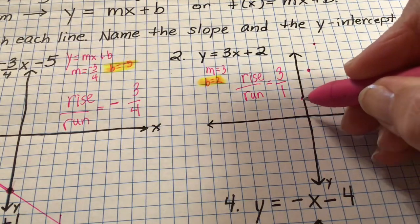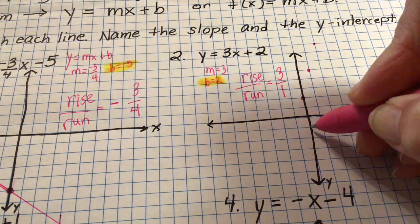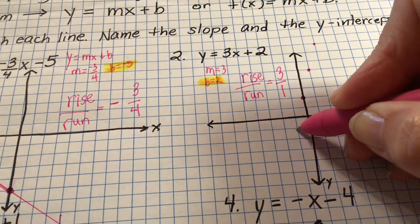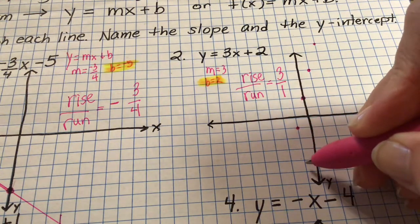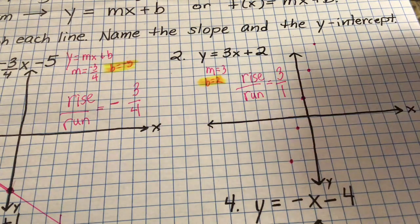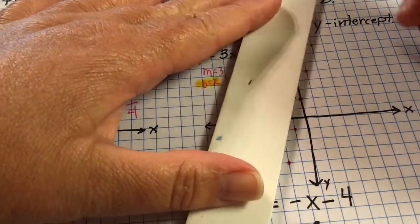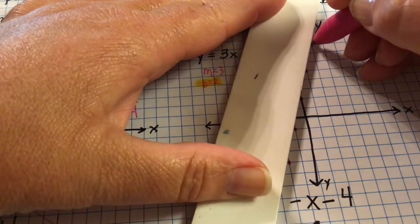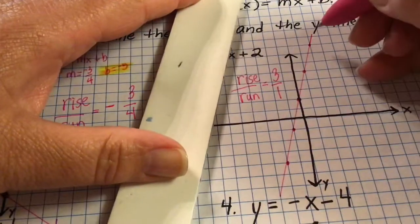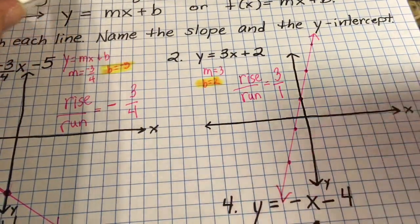If you go down first — down one, two, three, representing negative three — to keep the slope positive three, you'd run left one, because negative three over negative one is positive three. So you'd go down three, left one. Then I'll connect those dots and draw my line. That's the graph of y equals three x plus two.